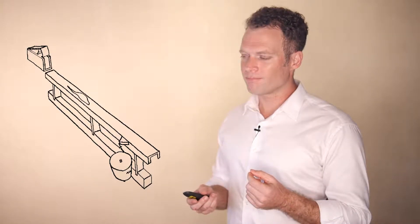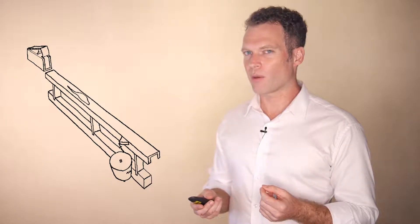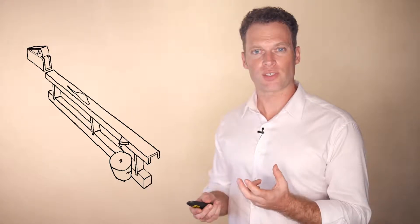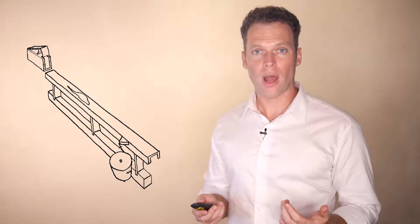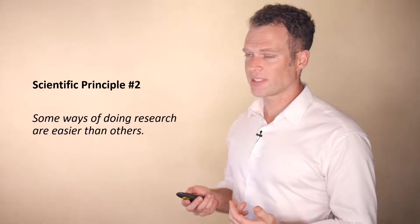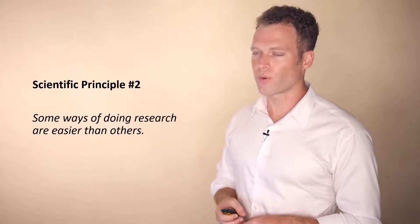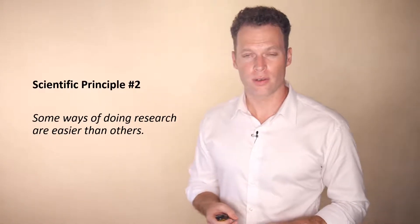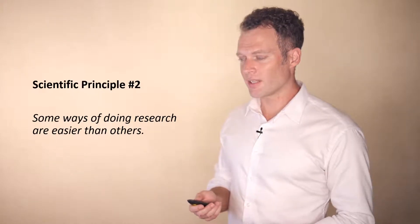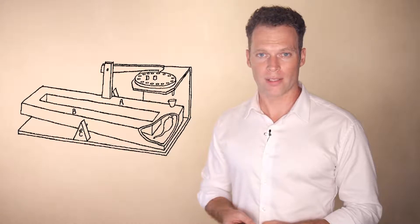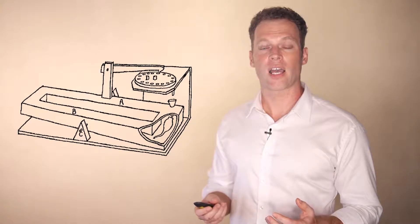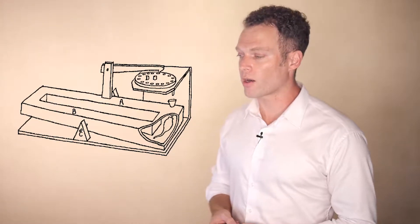But he also noted that it was a little bit tedious taking the rats from the end of the tunnel and replacing them at the start at the end of every trial. And so this got him to his second principle: that some ways of doing research are easier than others. In this case, he developed a rather complex apparatus. So it's not simpler in design, but it's simpler in that he automated the process.